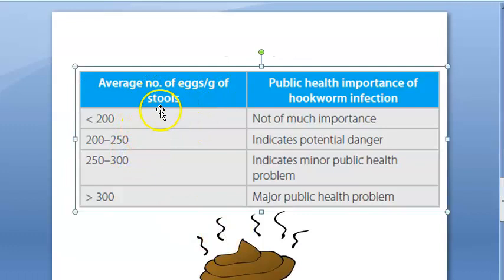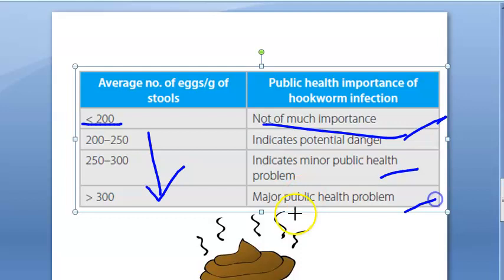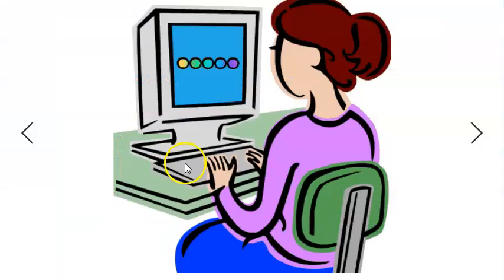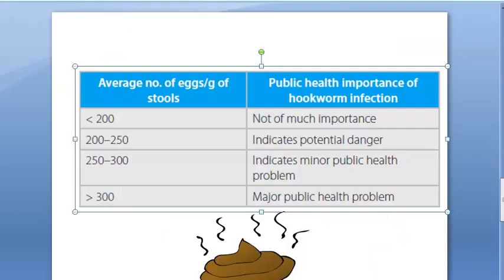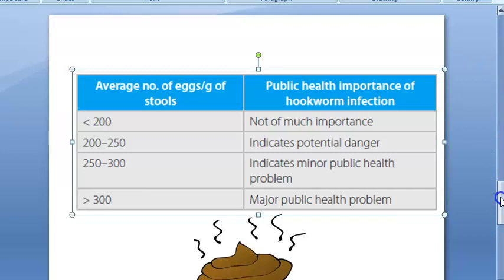If it is less than 200 eggs per gram of stool, it's not much importance. But if it is more than that, then it is an important health problem. The values are: less than 200 — not important; 200–250 — potential danger; 250–300 — minor problem; greater than 300 — major problem.